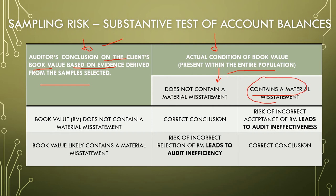One state is that it contains a material misstatement; another is that it does not. If we concluded that the book value does not contain a material misstatement based on the samples selected, and the actual population indeed does not contain a material misstatement, then we have arrived at the correct conclusion. But if the population actually contains a material misstatement, there is a risk of incorrect acceptance, which leads to audit ineffectiveness.